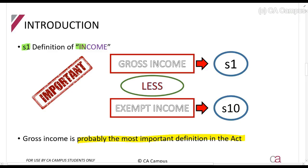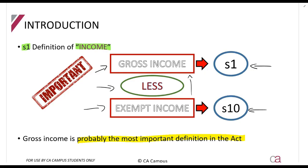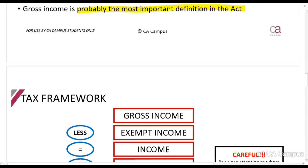Section 1 gives us a definition of the term 'income' — not gross income, just income. It says income is defined as gross income less your exempt income. Gross income is discussed in Section 1, and exempt income is discussed in Section 10. In simple terms, exempt income are amounts of gross income which they've deliberately said we do not want to tax, so it is exempt from tax, or part thereof. So when you hear us talking about income, we're basically referring to gross income less exempt income.